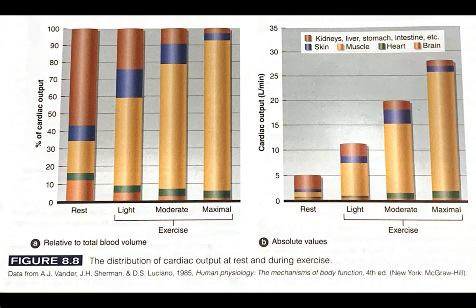You can also see on these two graphs that absolute cardiac output increases as a result of intense exercise, and also that the percentage of cardiac output supplied to the muscles increases significantly as well.